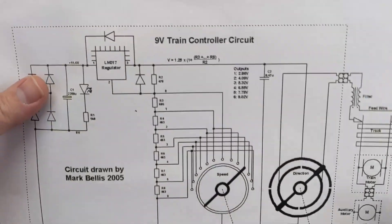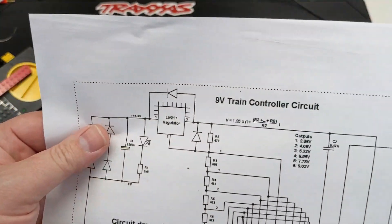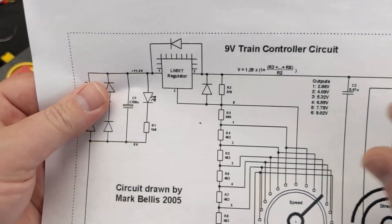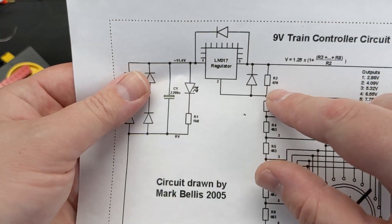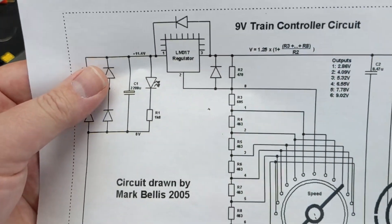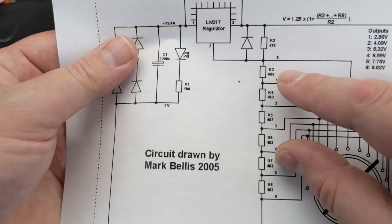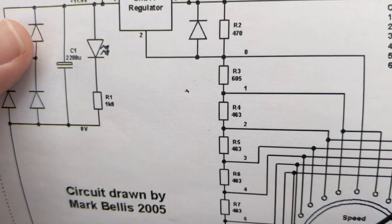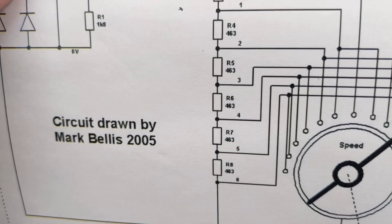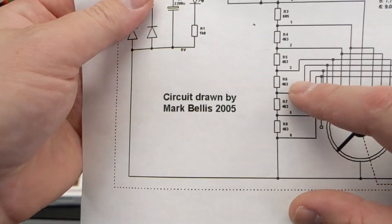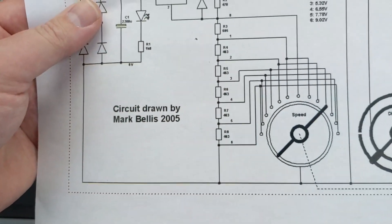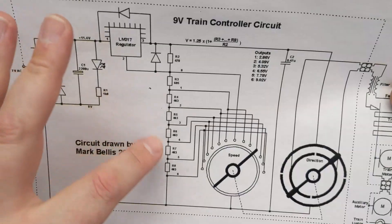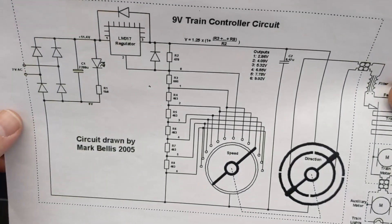So this is what we've got. This is the formula that calculates the output voltage. R2 is right here, 470 ohms. R3 is 650, or 605, and then the rest are 463 each. And so by changing the values of these resistors, we can actually change the output voltage. I've already done the math here, what I'm going to change.